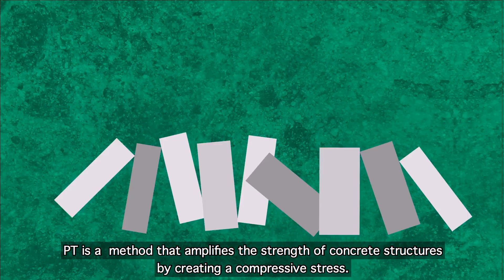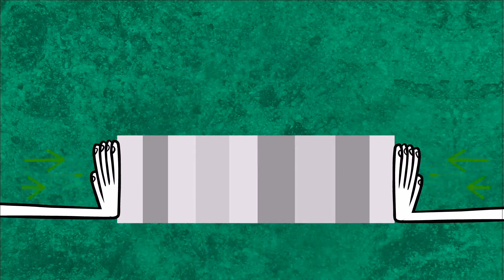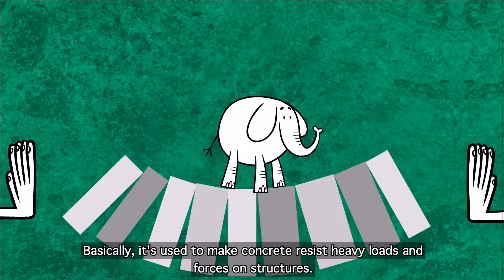PT is a method that amplifies the strength of concrete structures by creating a compressive stress. Basically, it's used to make concrete resist heavy loads and forces on structures.